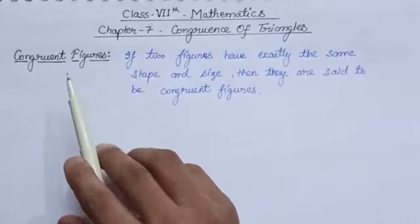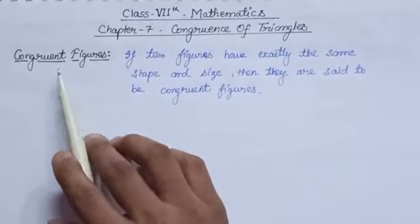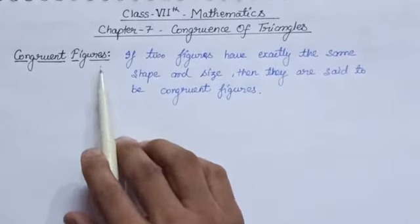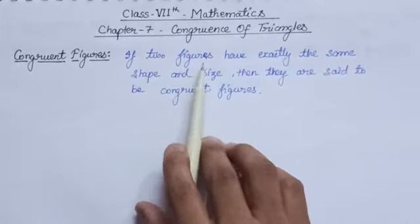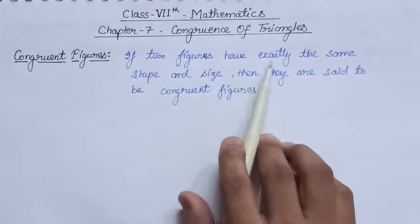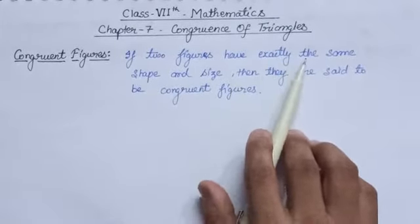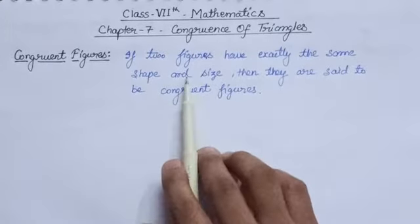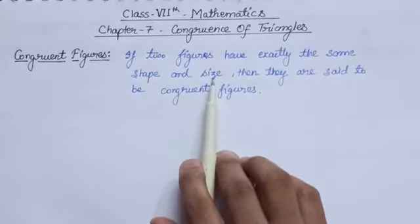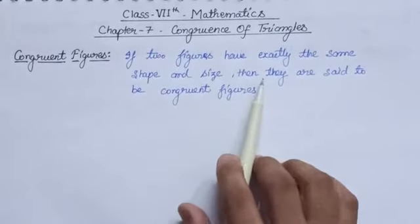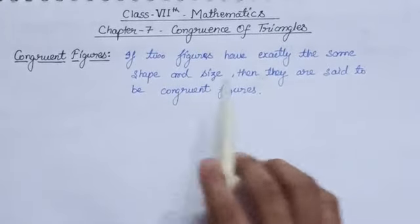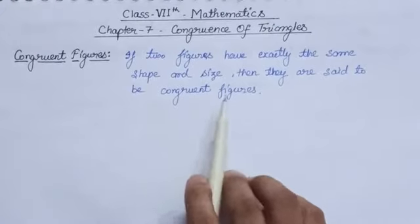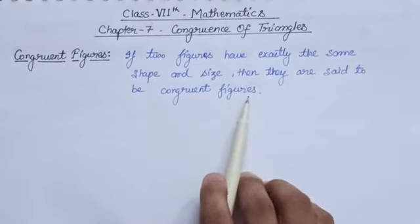First let us understand what are the congruent figures. If two figures have exactly the same shape and size, then they are said to be congruent figures.